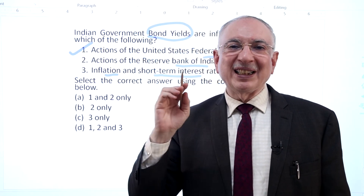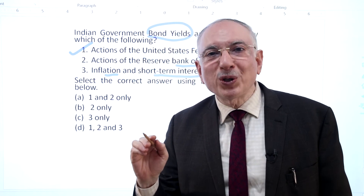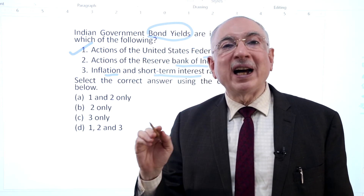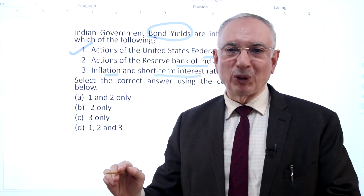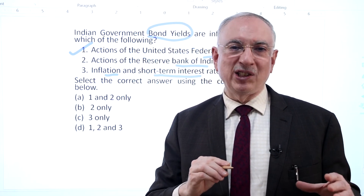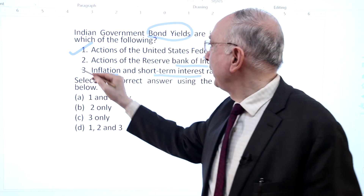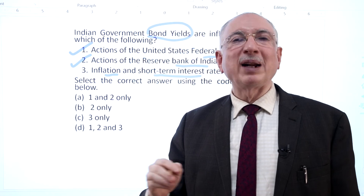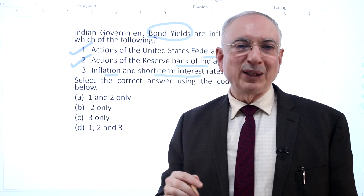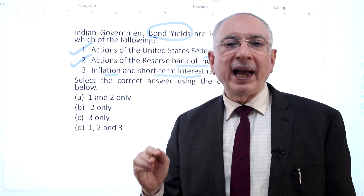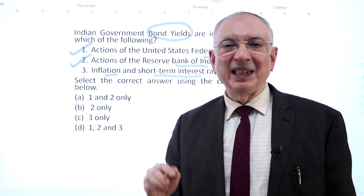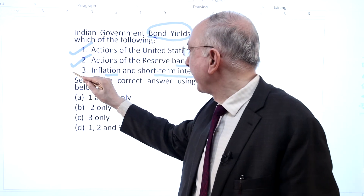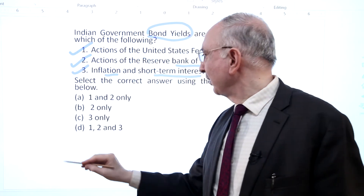Actions of the RBI determine liquidity and also the cost of funds available in the economy. The cost of funds directly impacts the demand for government securities and thereby influences the yield. Hence statement 2 is correct. Inflation and short-term rates determine the purchasing capacity, and this also impacts the demand and price of government securities, thereby influencing the yield. Hence statement 3 is correct. So option D is the correct answer.